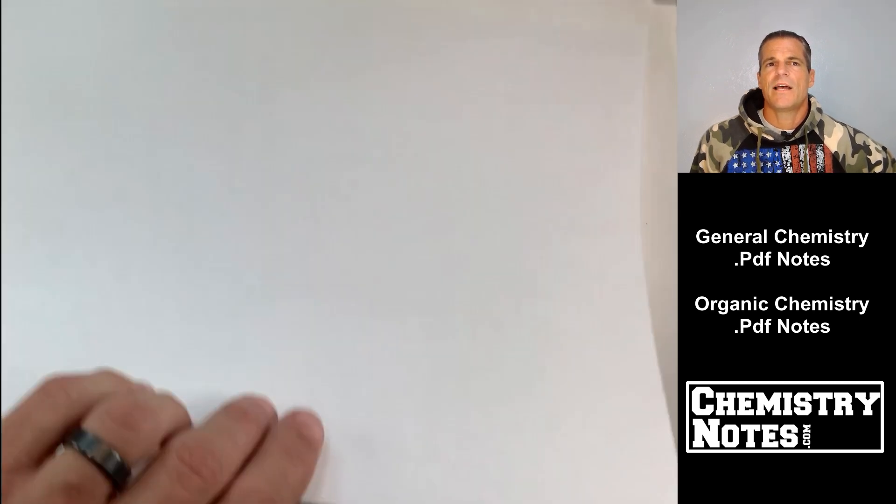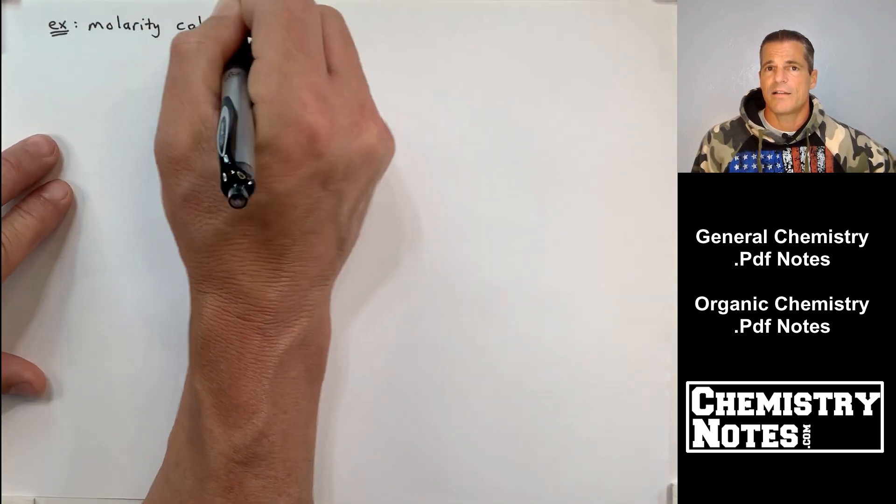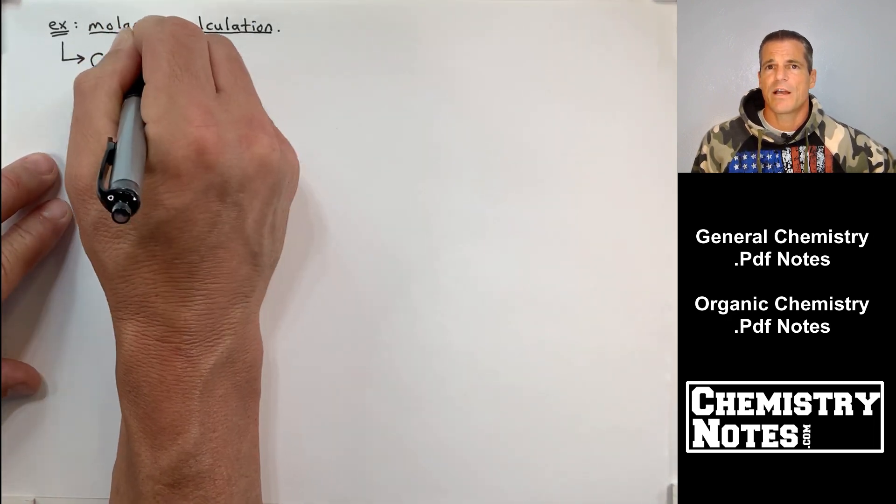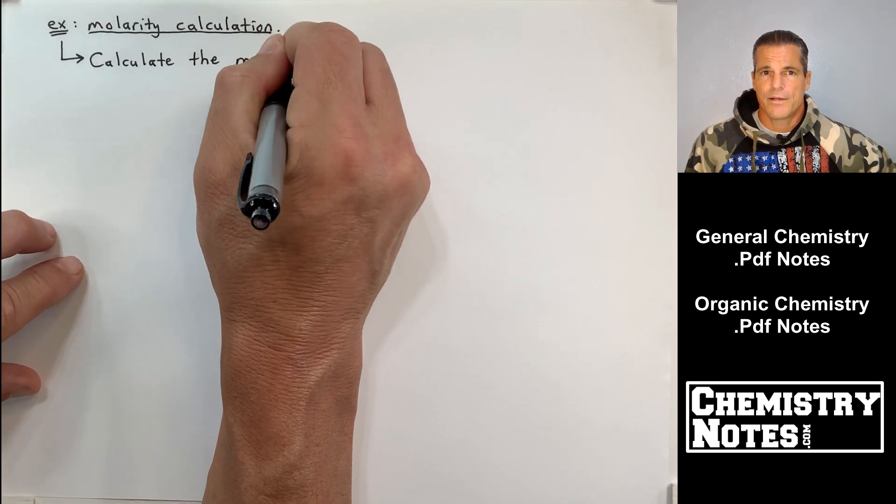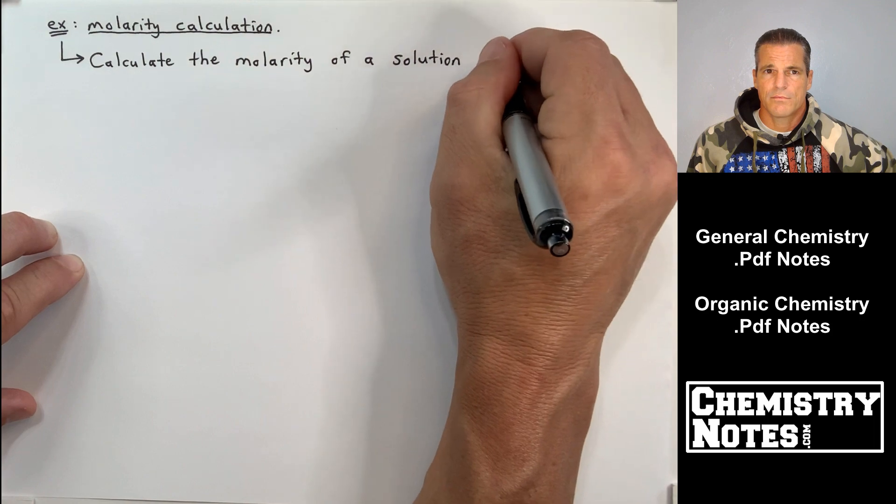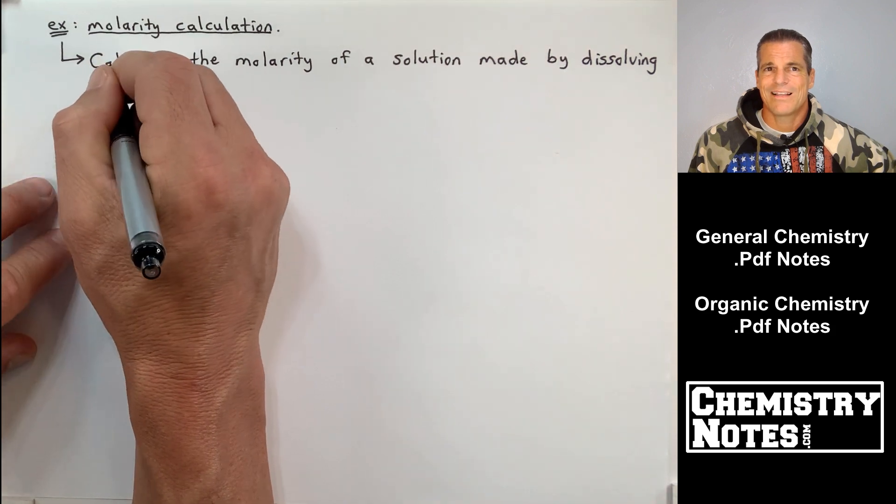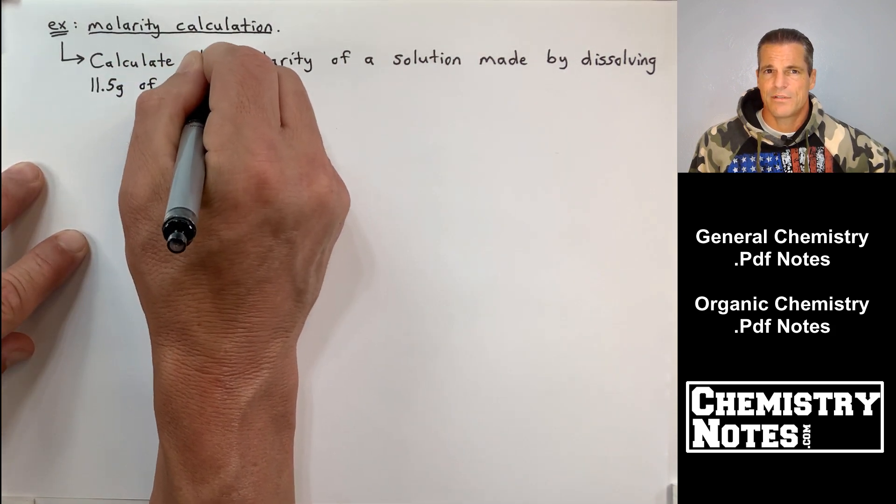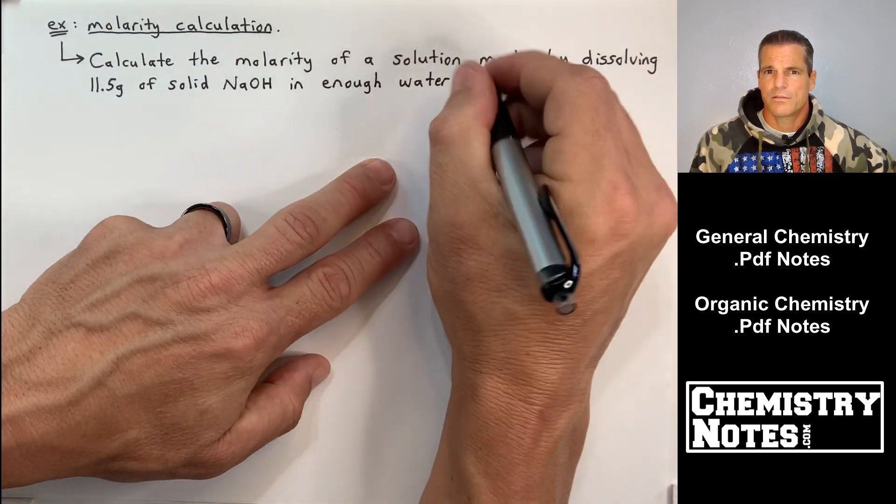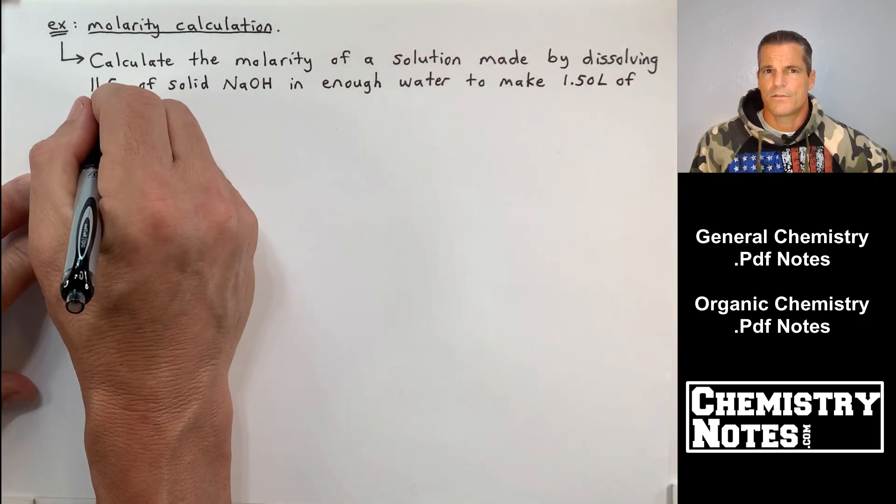All right, so this will be the last thing we'll do here in this video. This is an example of a molarity calculation. Our next video, we're going to do a lot of molarity calculations, but we'll end this clip with just a quick molarity calculation. Here is our problem right here. It says, calculate the molarity of a solution, in other words, calculate the concentration of a solution made by dissolving 11.5 grams of solid NaOH, sodium hydroxide, in enough water to make 1.50 liters of solution.